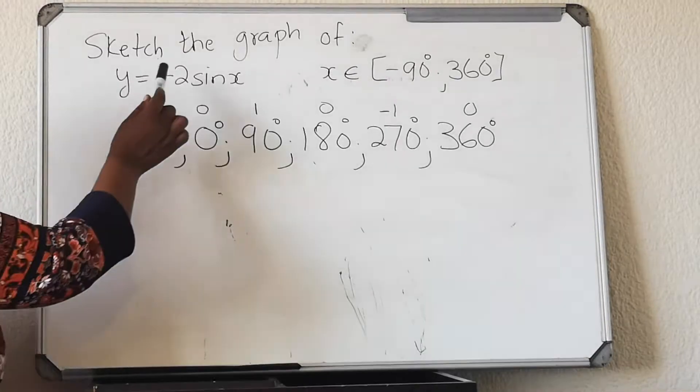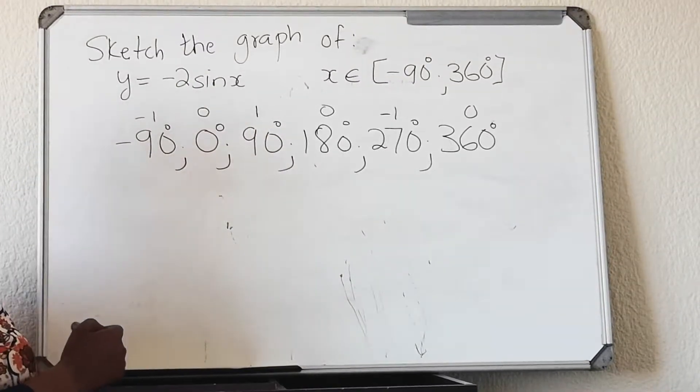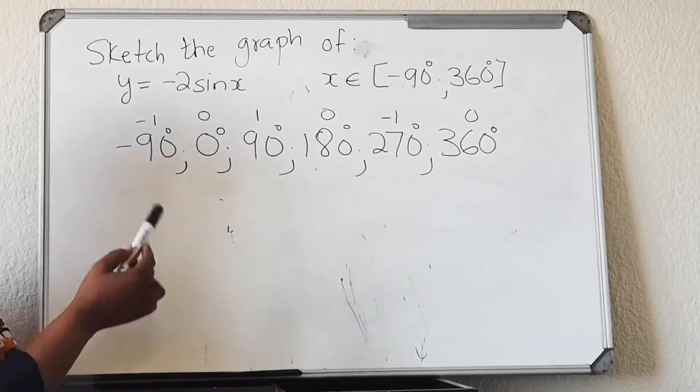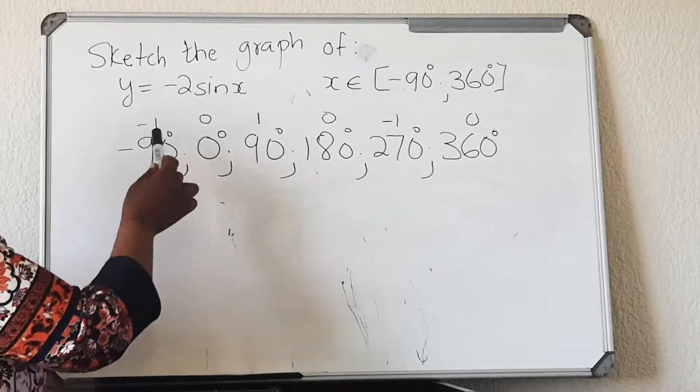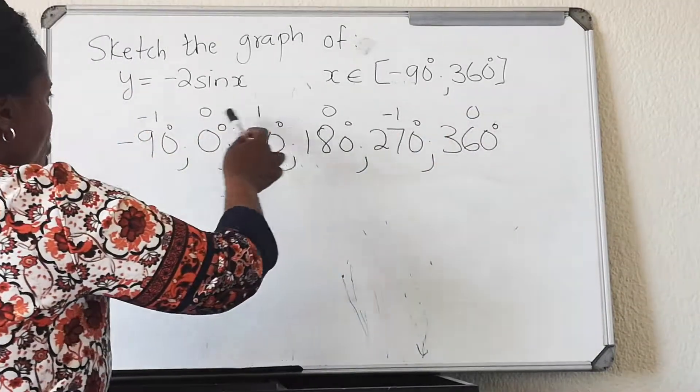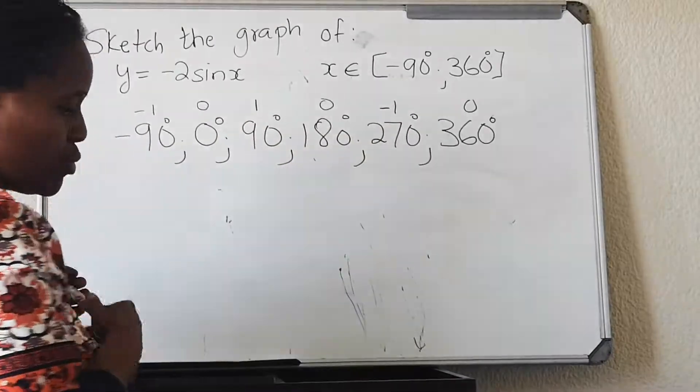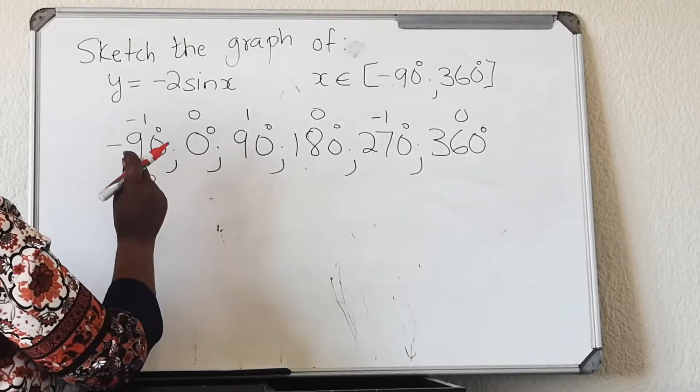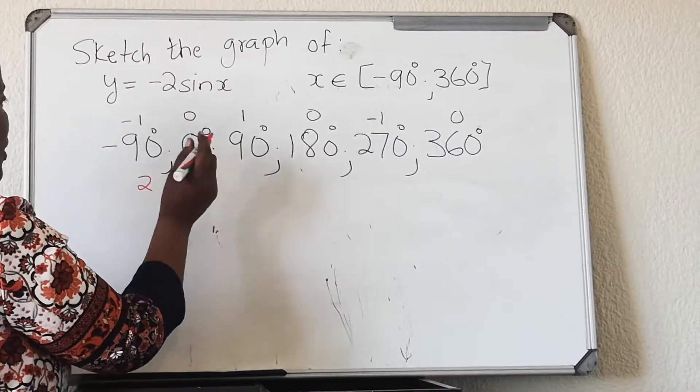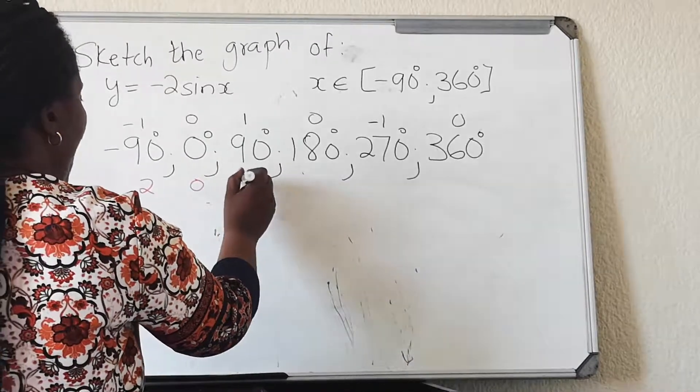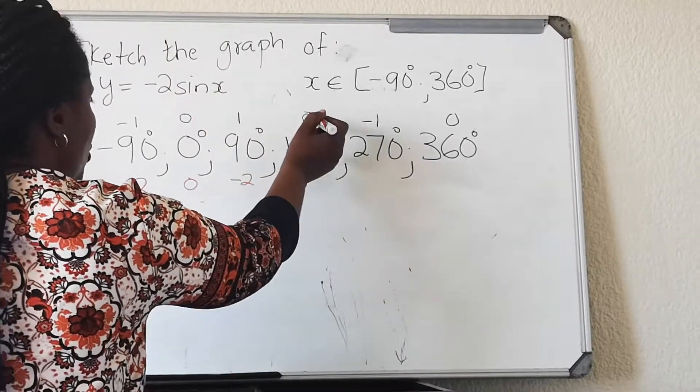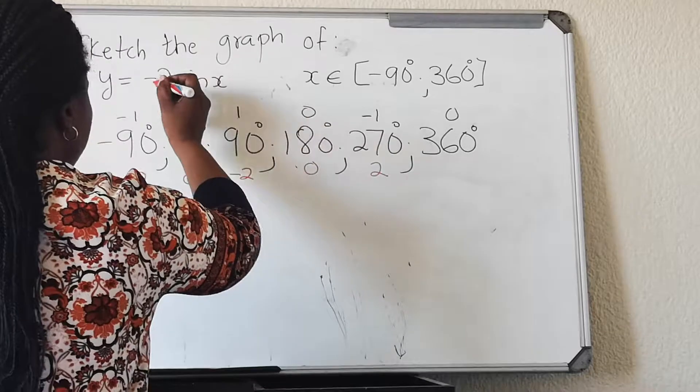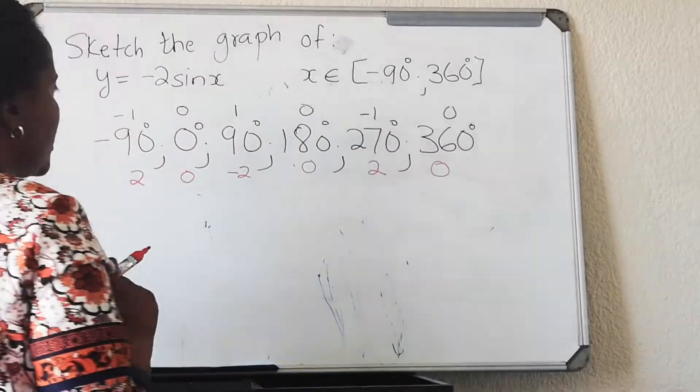Now, because you have A, which is changing the amplitude, and your A is minus 2. The rule said, if you change the amplitude, you multiply all the y-values with minus 2. So you're going to say minus 2 multiplied by minus 1, you're going to get 2. Minus 2 multiplied by 1, you're going to get minus 2. Minus 2 multiplied by 0, you're going to get 0. Minus 2 multiplied by 1, you're going to get minus 2. Minus 2 multiplied by 0, you're going to get 0. Right?